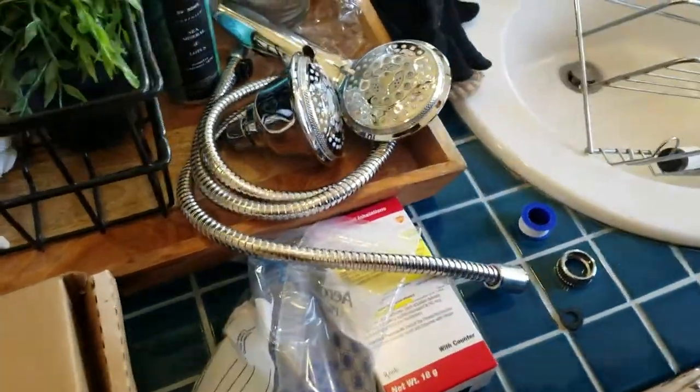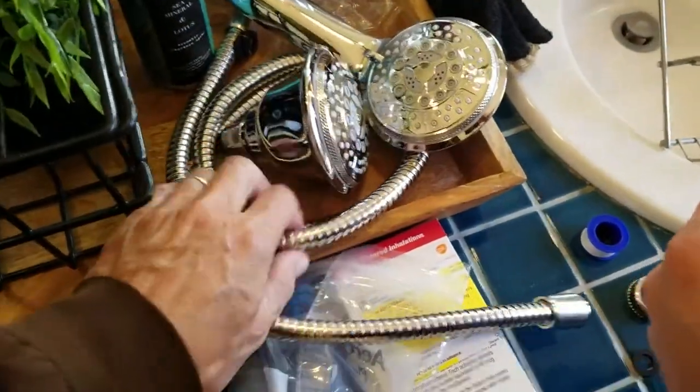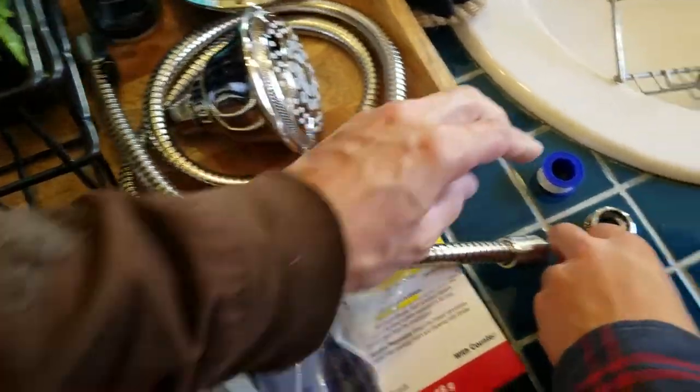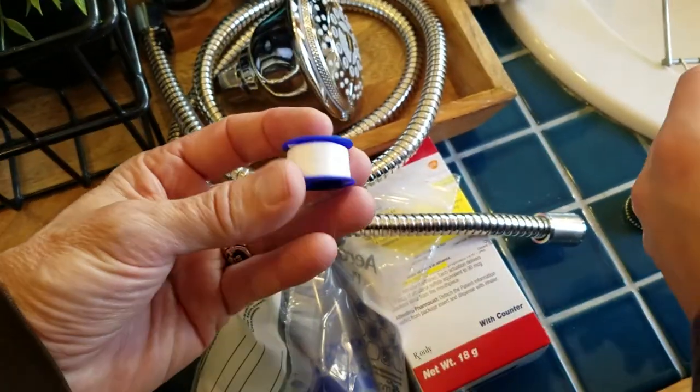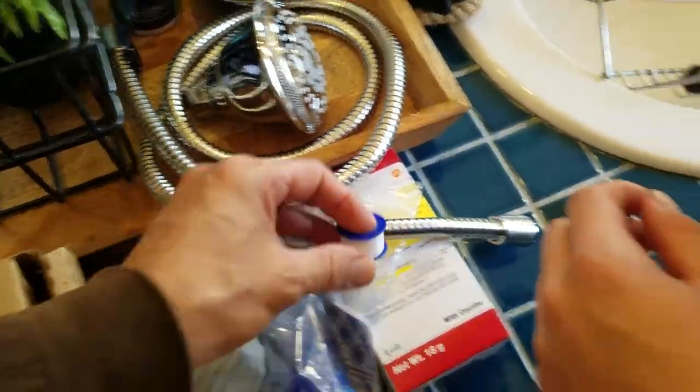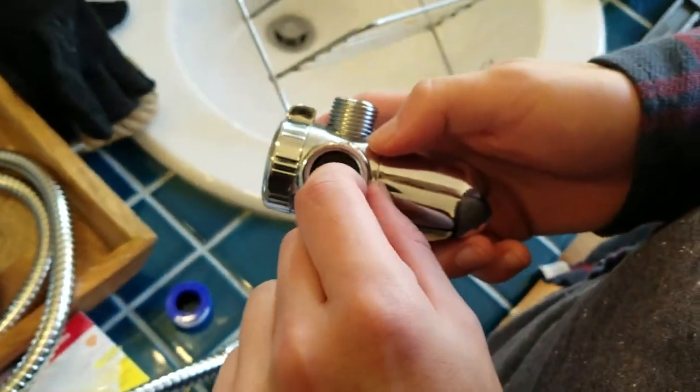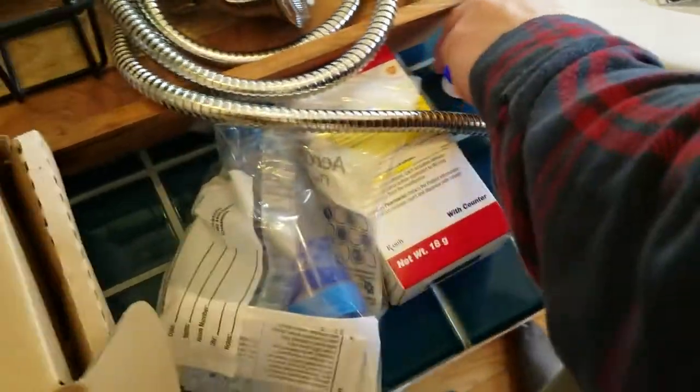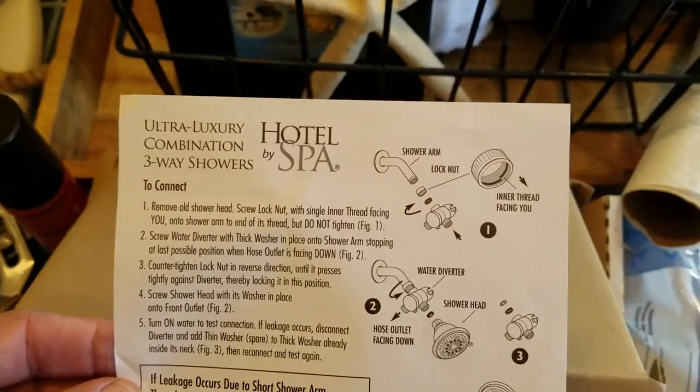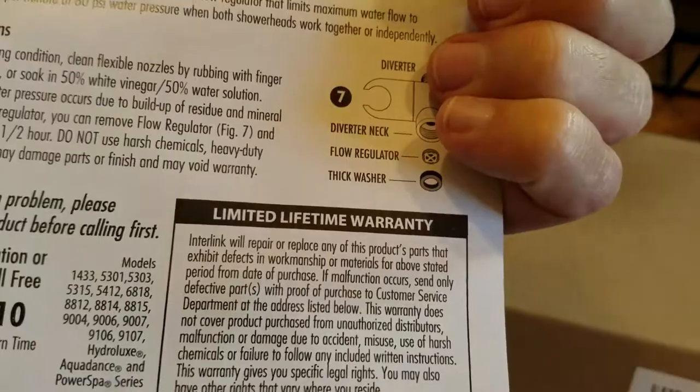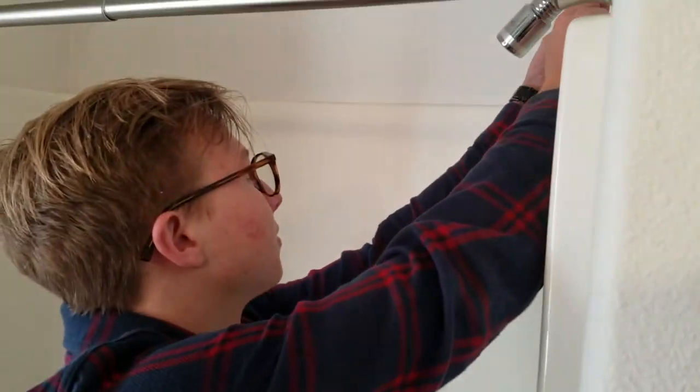Okay, it comes with everything you need: the two heads, flexible hose, some plumber's tape, the washers. We'll be putting that all together. It comes with instructions and has a limited lifetime warranty. Okay, Lanan, my son, is going to be helping me.